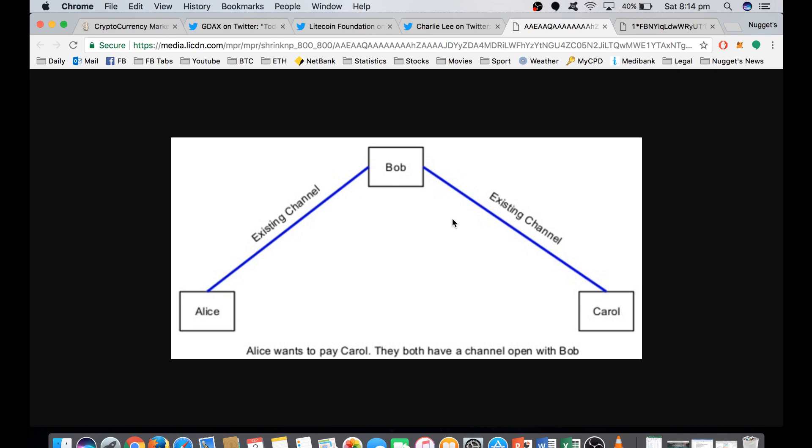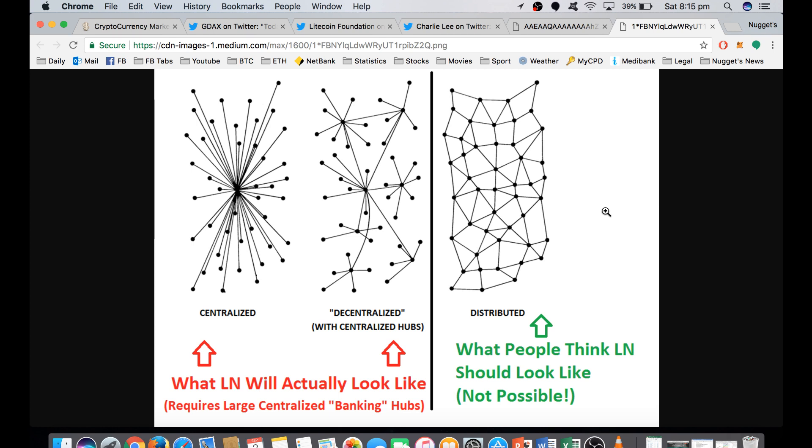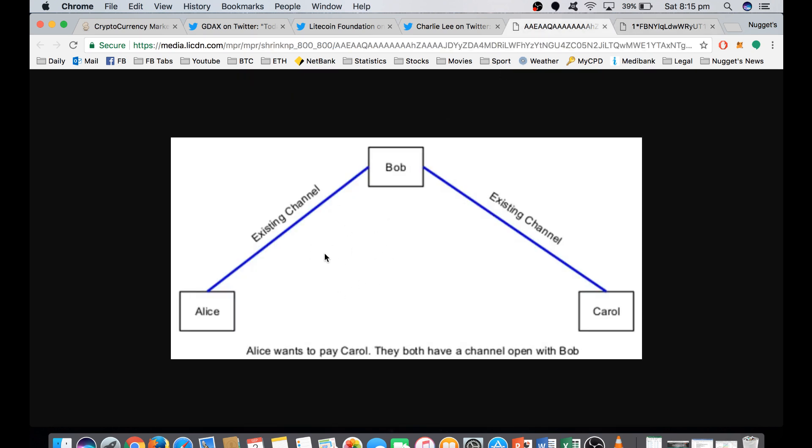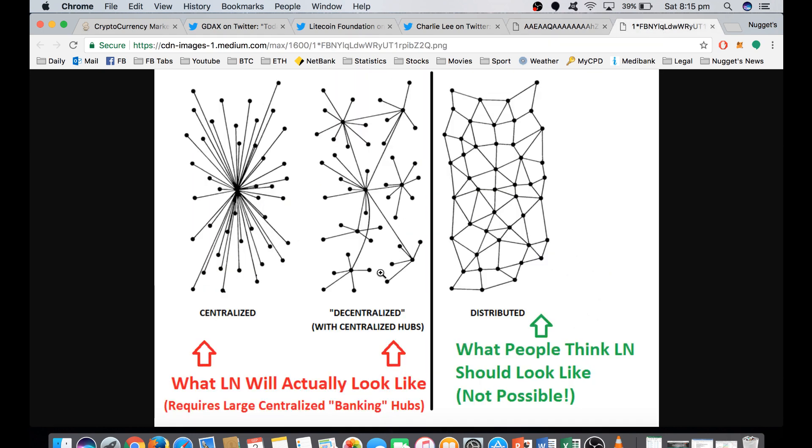But this does allow for that mass adoption and mainstream adoption of cryptocurrencies to really blossom. So the only thing that's a bit of a worry here is there's going to be some degree of centralization. So a lot of people are thinking that this is probably what it's going to look like, being able to lightning pay anyone through any of these channels. But because you do have to lock up or deposit some cryptocurrency for this to be possible, it's most likely that we're going to see some degree of centralization with larger amounts being locked up in like a centralized hub as it's shown here.